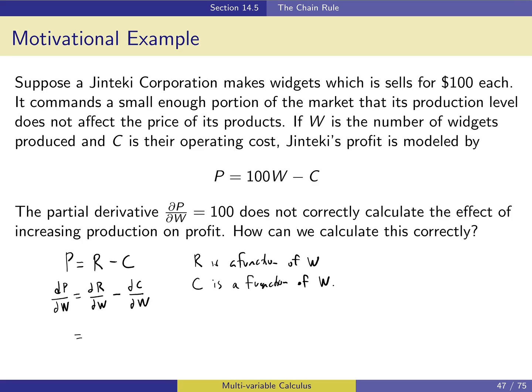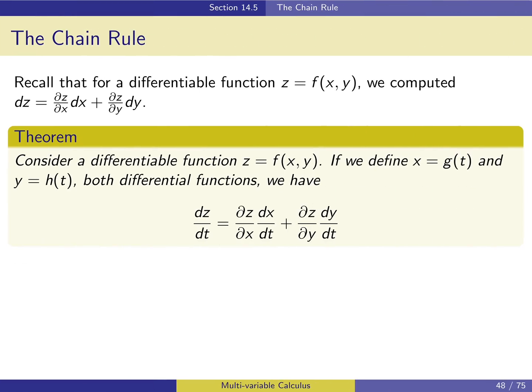In this case, dr/dw, because we know r is 100w, equals 100. dc/dw we don't know, but if we could calculate that, we would know how profit changes as a function of w. The chain rule tells us how to deal with this situation in general, when we have a function of multiple variables but each of those variables is itself a function of some third variable.